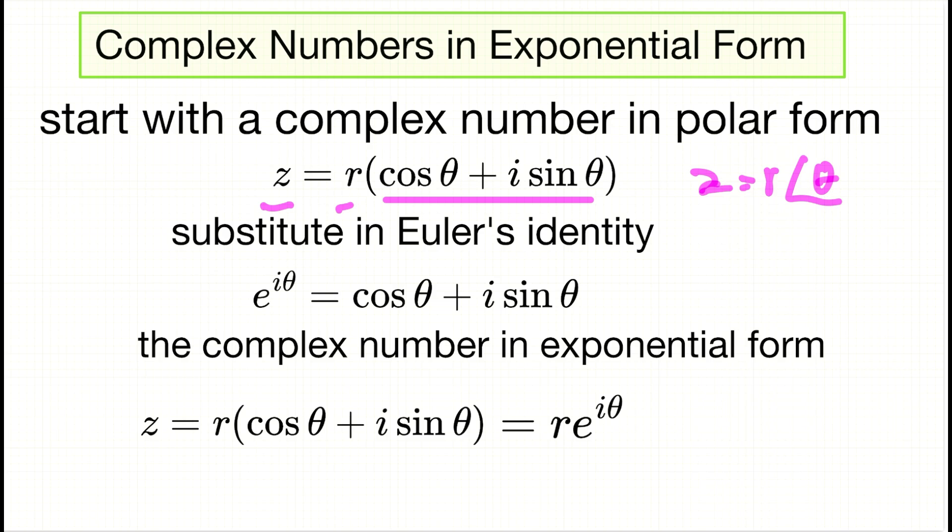Now we want to use what's called Euler's identity, which is right here. You can see it's very similar to what z looks like, which turns out to be very handy. This was developed by Leonhard Euler centuries ago, and it's extremely helpful because it relates the sine, cosine, exponential function, and complex numbers. It's really a powerful equation. We're going to take this and substitute it in here.